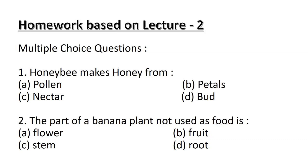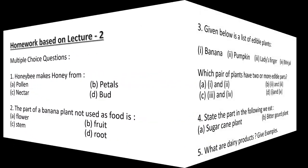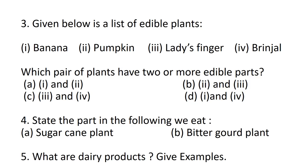Question number 2: The part of a banana plant which is not used as food is? Option A: flower. Option B: fruit. Option C: stem. Option D: root. Question number 3: Given below is a list of edible plants - option 1 banana, option 2 pumpkin, option 3 lady's finger, option 4 brinjal. Which pair of plants have two or more edible parts? Option A: 1 and 2. Option B: 2 and 3. Option C: 3 and 4. Option D: 1 and 4.